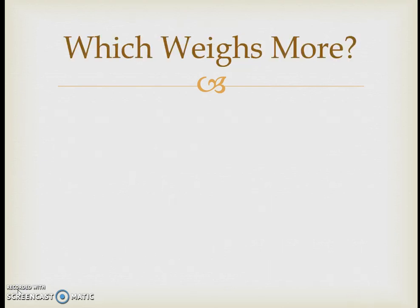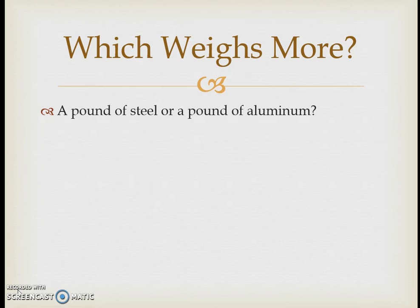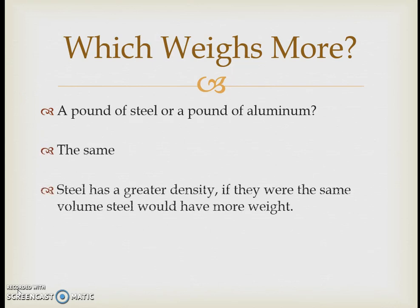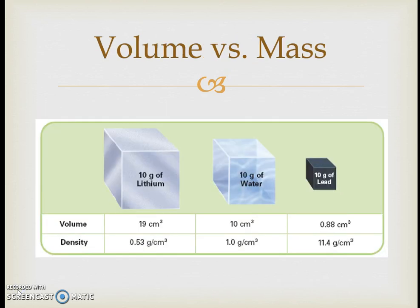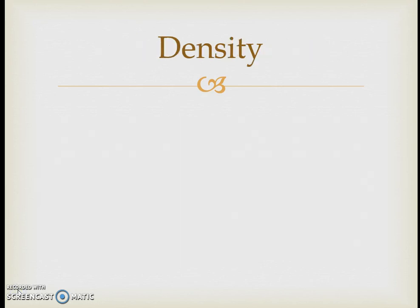The last topic is density. A classic trick question is: which weighs more, a pound of steel or a pound of aluminum? They weigh the same — but we think steel weighs more because it has greater density. Similarly, looking at lithium, water, and lead, each with 10 grams — you need much more lithium to equal 10 grams because it has a much lower density than lead. That's why lead feels so heavy: very little of it equals 10 grams.